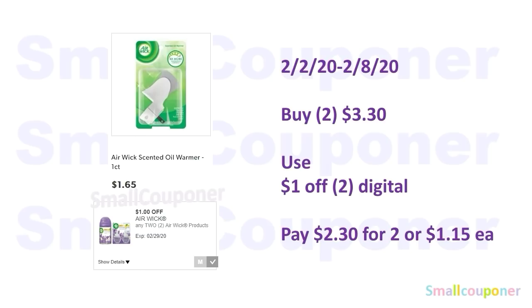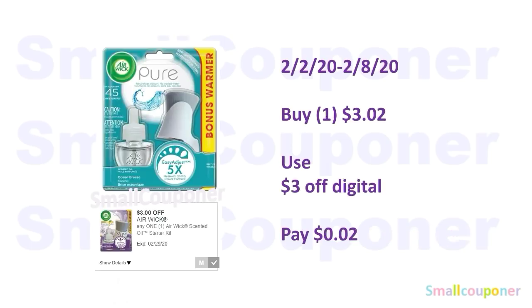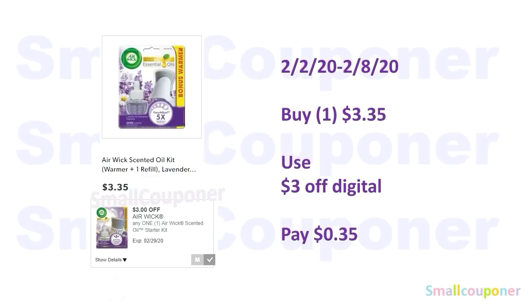The Airwick scented oil warmer is $1.65 each. Buy two for $3.30, use the $1 off 2 digital, and pay $2.30 for two or $1.15 each. If you can find the Ocean Breeze scent, these Airwick starter kits are $3.02 on clearance — use the $3 off digital and pay $0.02. If you cannot find that scent or none on clearance, buy a regular one for $3.35, use the $3 off digital, and pay $0.35.